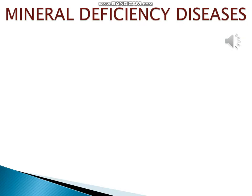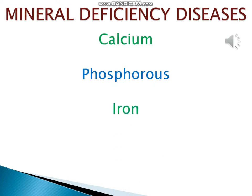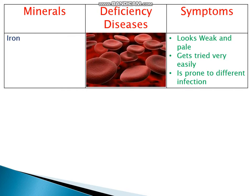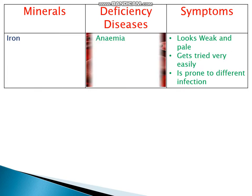Next is mineral deficiency diseases. Minerals like calcium, phosphorus, iron, iodine, and sodium are present in our body in small amounts. Deficiency of different minerals leads to improper functioning of different parts of the body. Deficiency of iron causes anemia, which means less hemoglobin content in blood. Symptoms include looking weak and pale, getting tired very easily, and being prone to different infections.